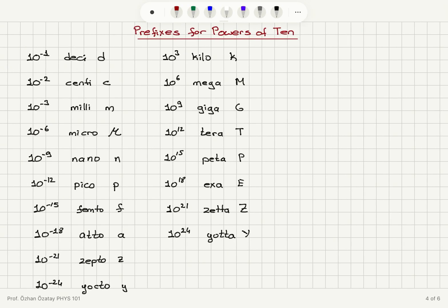We covered prefixes for powers of 10: deci, centi, milli, micro, nano, pico, femto, atto, zepto, yokto (for smaller quantities), and kilo, mega, giga, tera, peta, exa, zeta, yota (for larger quantities).